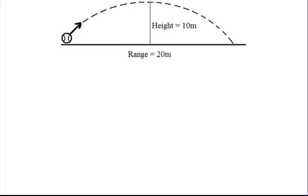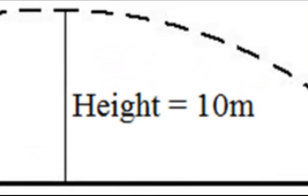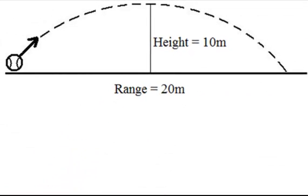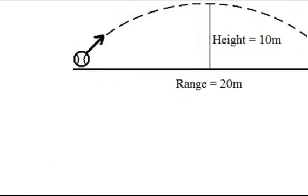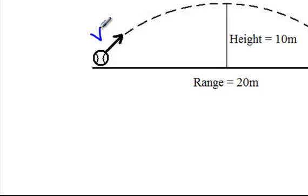Hey, Denon High School. This is Mr. Aden here. We're going to be taking a look at a full projectile motion problem again, but we're going to look at it in a different way. We've been given the height of 10 meters, we've been given the range of 20 meters, and we're going to be solving for the velocity that the baseball initially got rocketed off into the air, and we're going to look for the angle as well.